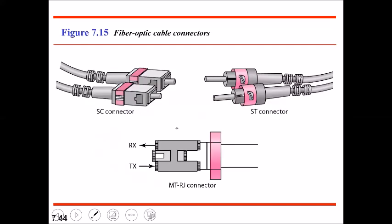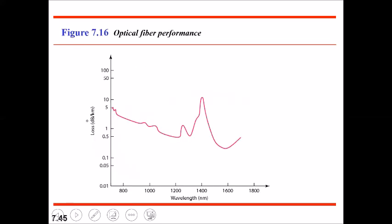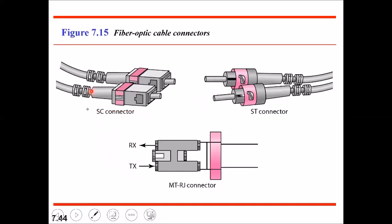There are basically three types of connectors for fiber optic cables. The subscriber channel (SC) connector is normally used for cable TV and uses a push-pull locking system. The straight tip (ST) connector is used for connecting cable to networking devices.